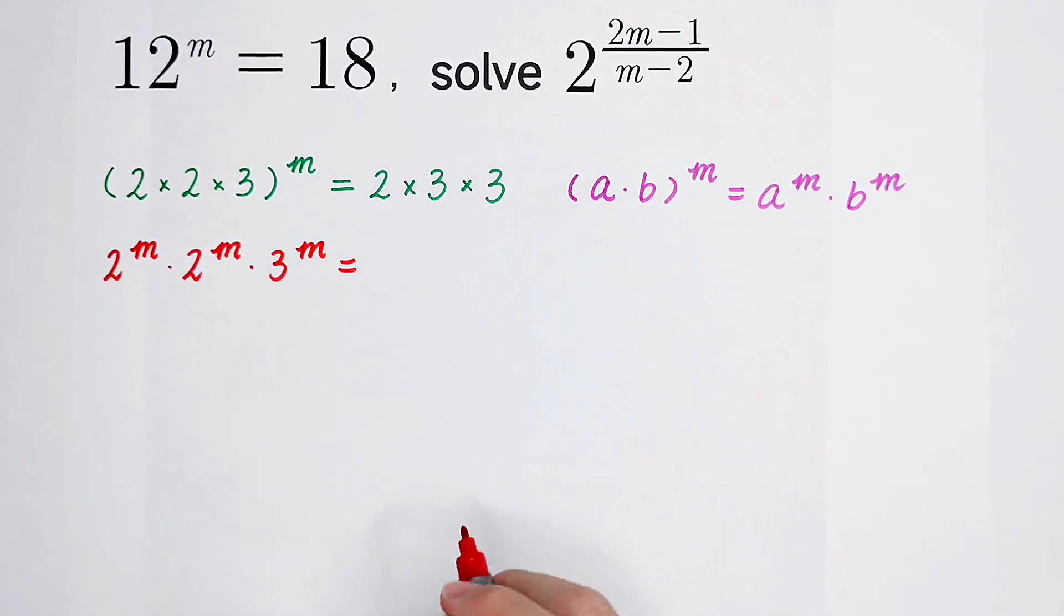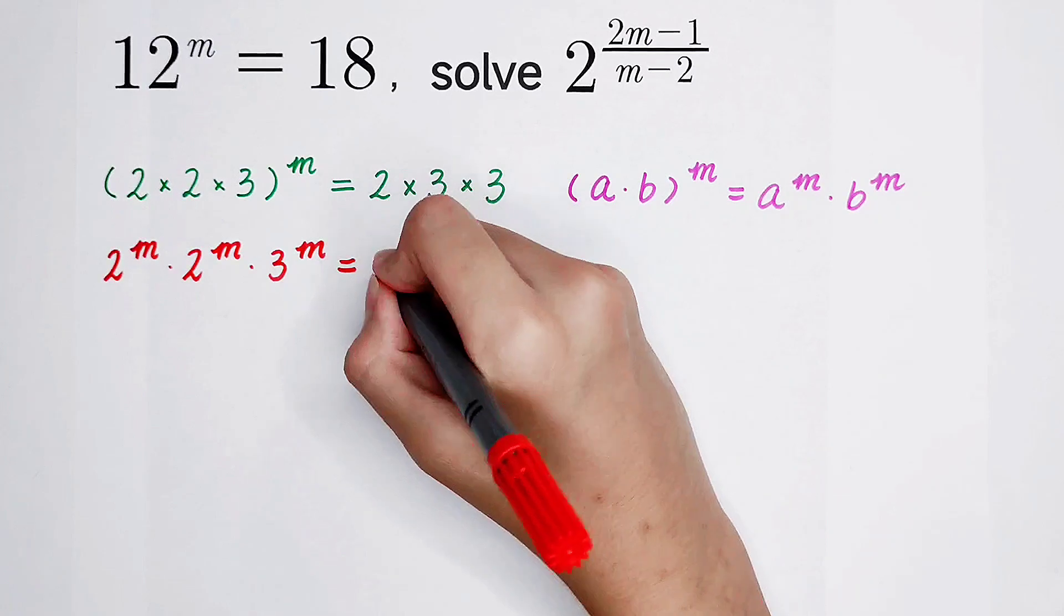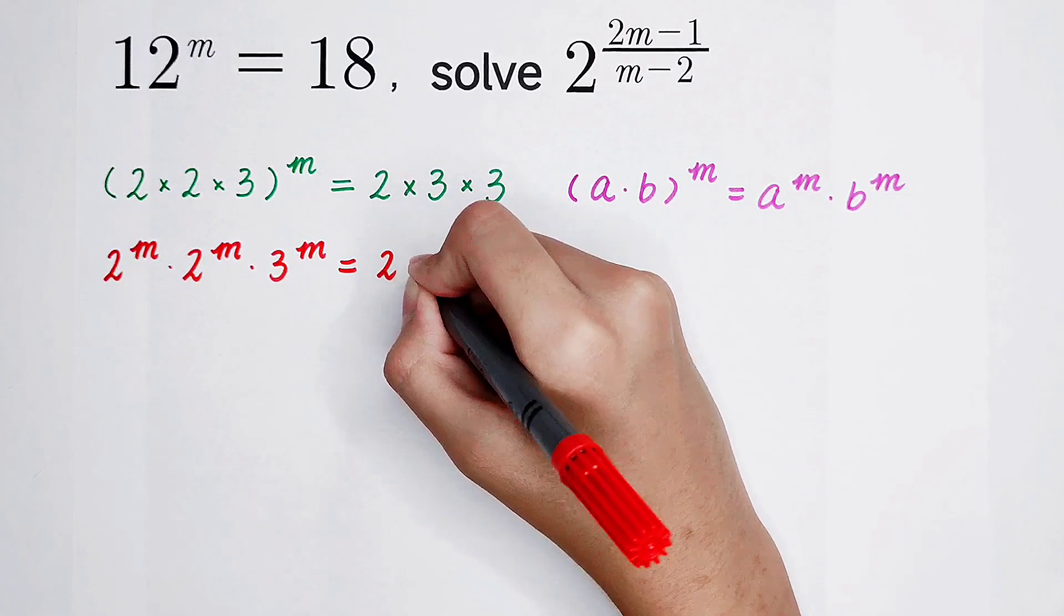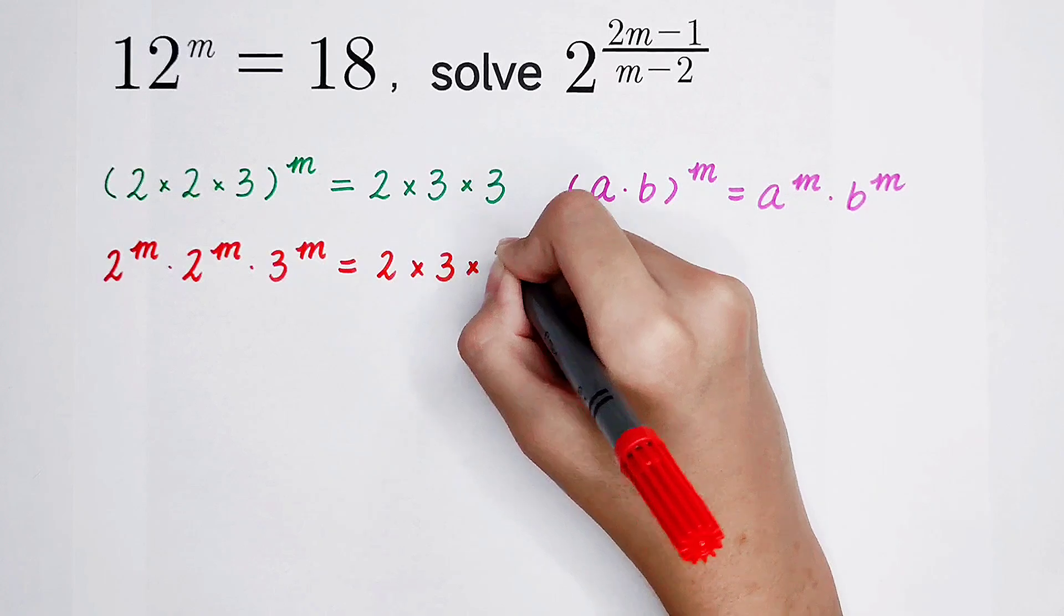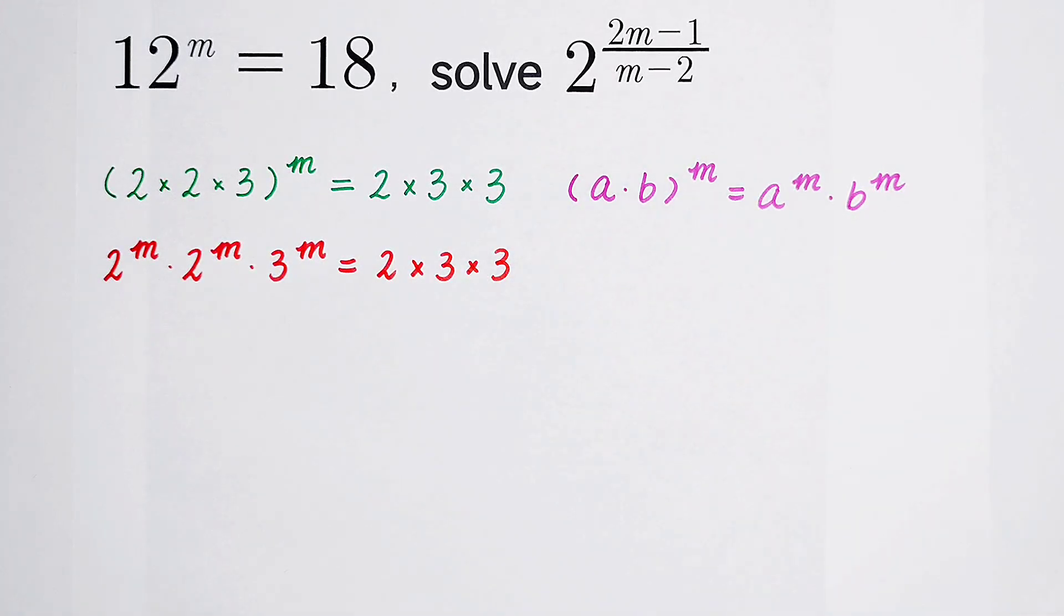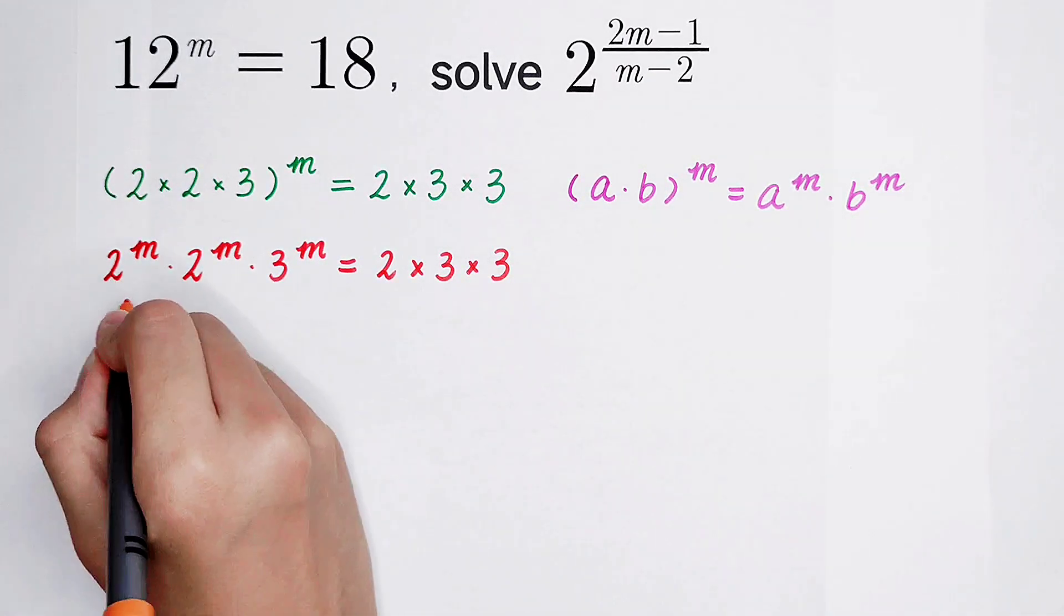What's on the right hand side? Just 2, then times 3, then times 3. Okay, maybe you've noticed that.